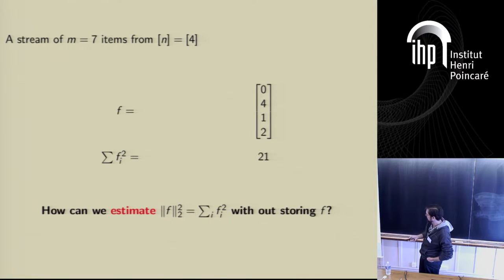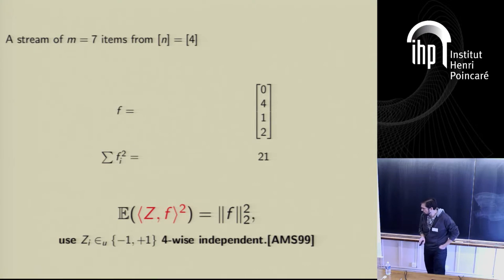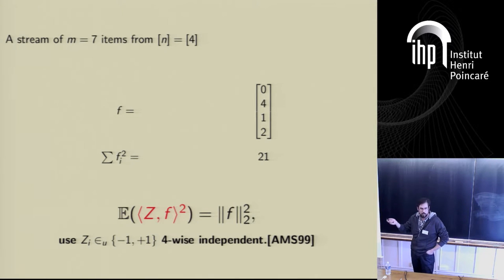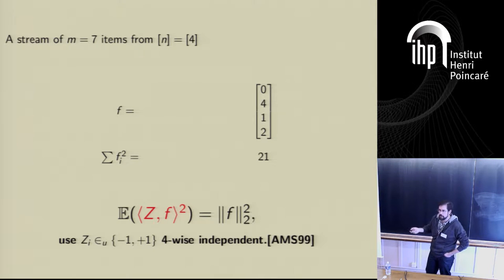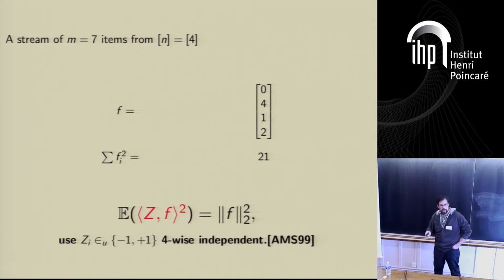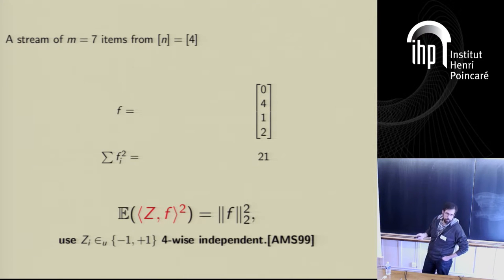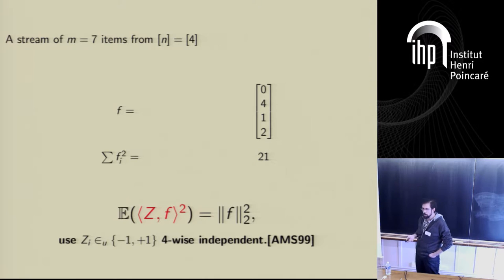This is a classic problem with a really elegant solution. We can do it basically with one inner product, or a small number of inner products. We sample a random vector and compute its inner product with the high-dimensional vector. Because the high-dimensional vector is a sum of unit vectors and the inner product is linear, we can compute this with just one counter. In expectation, we get exactly what we're trying to approximate. By repeating and taking medians and averages, we get a high-probability, high-accuracy estimate. The caveat is you need to store this big vector z — a vector of plus or minus ones — but using limited independence we still get the same guarantee. This gives us a log n bits algorithm for approximating the sum of squares of the coordinates.